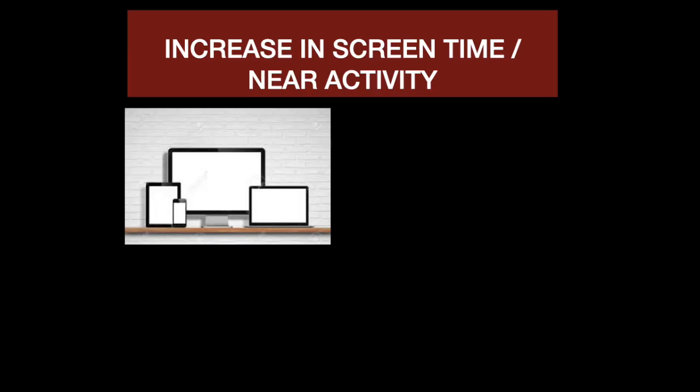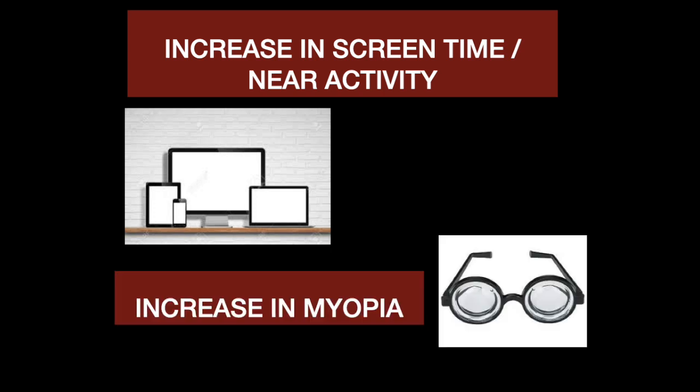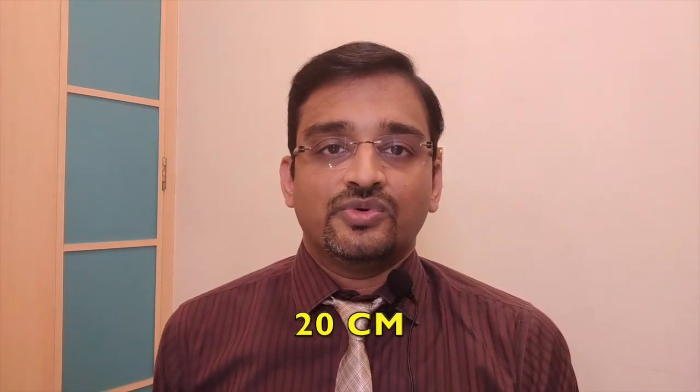Increase in screen time or near activity leading to myopia has been proven by a number of studies. A study from Taiwan found that myopia incidence increases significantly in children between 7 to 12 years when they do a lot of near activity after school hours. Another study from China revealed that children doing tasks less than 20 centimeters from the eye — mostly reading or mobile activity — have an increased risk of myopia.